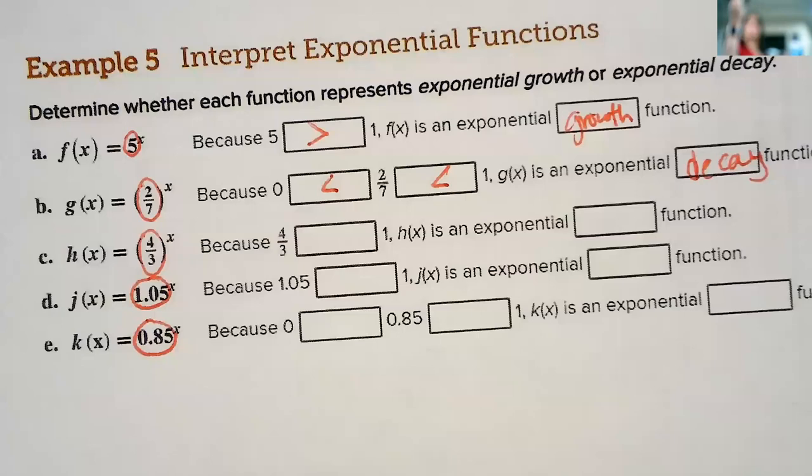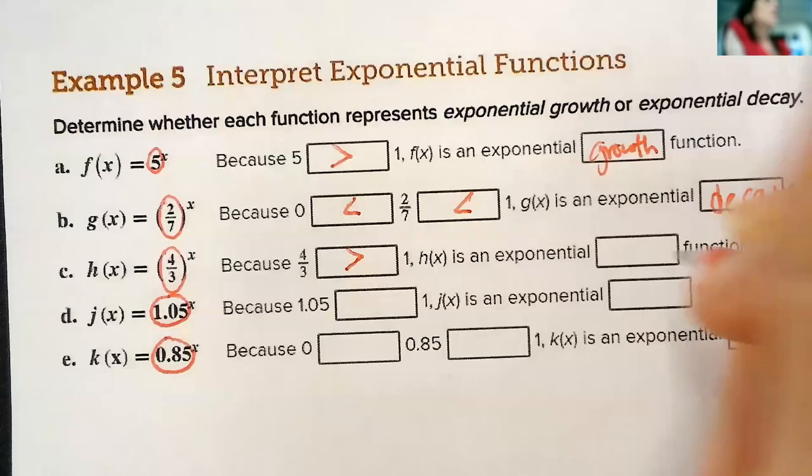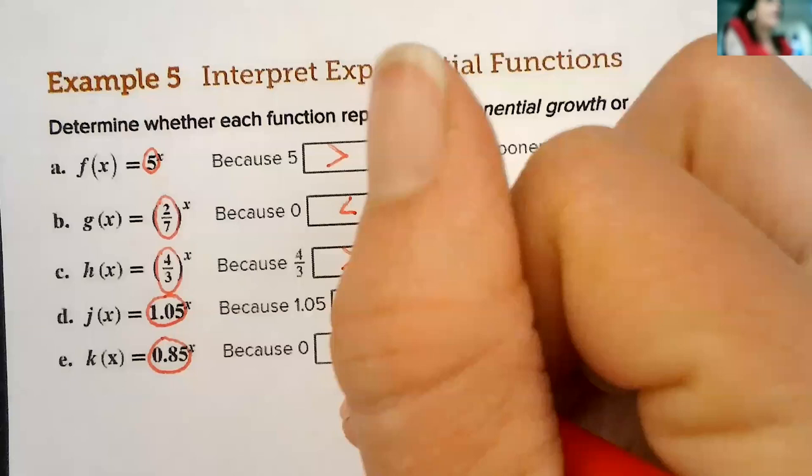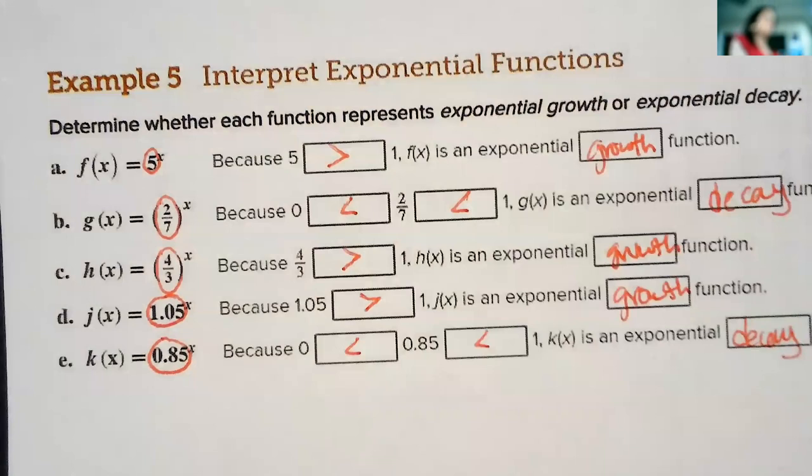Four-thirds? You're like, oh, that's a fraction, but it's actually greater than 1. The top number is greater, so it is growth. This one is greater than 1, so it is growth. This one is in between 0 and 1, so it is decay.